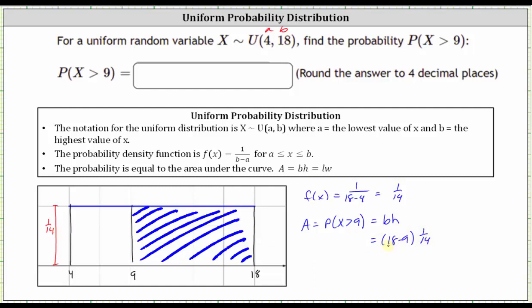So simplifying, 18 minus nine is nine, giving us nine times 1/14, or 9/14. But this problem does want a decimal to four decimal places, so now we need to convert 9/14 to a decimal by dividing nine by 14. Let's do this on desmos.com.